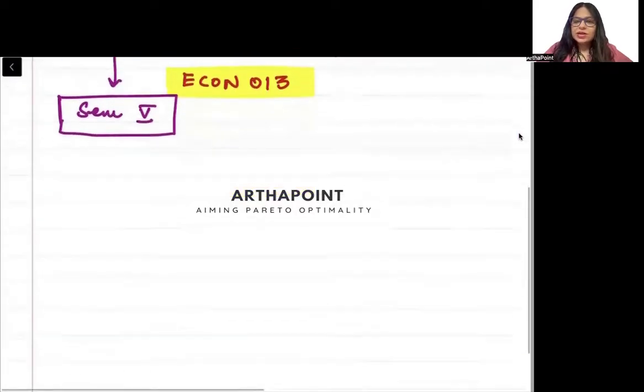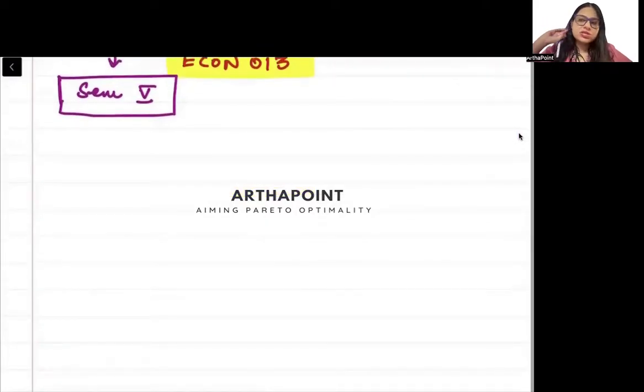Game theory and strategic interactions. This is course Econ 013. And this is the course which will be for BA Honours Semester 5 students. Now let's quickly look at the important books for this one, because this is a very difficult course. Let me tell you right away. Very tricky course. And therefore you need to put 100% of your effort from day one.